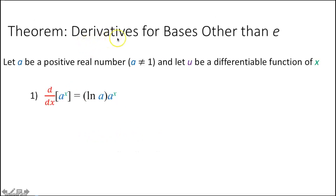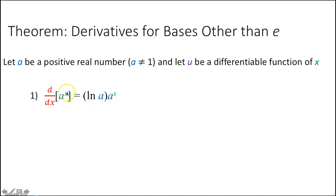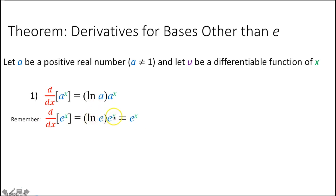Next, derivatives for bases other than e. Let a be a positive real number, a not equal to 1, and let u be a differentiable function of x. Then d/dx of a^x is equal to ln(a) times a^x. This is something you have to memorize. If you're taking the derivative of a number raised to your independent variable — like 2^x or 5^t — it's going to be the ln of the base times the exact same thing. For example, the derivative of 2^x is ln(2) times 2^x. This also explains why the derivative of e^x is e^x: it would be ln(e) times e^x, and ln(e) equals 1.